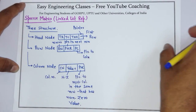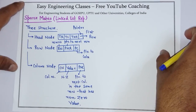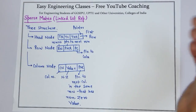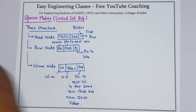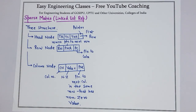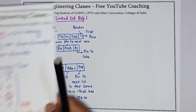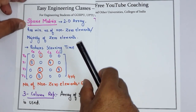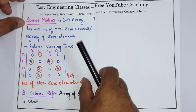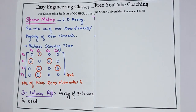So these three structures are used for the sparse matrix linked list representation. Now we will draw the linked list representation of the same example which we have seen in the three column representation.